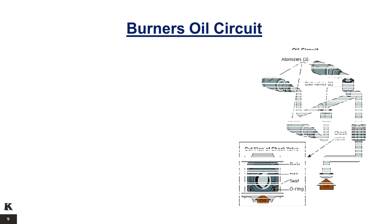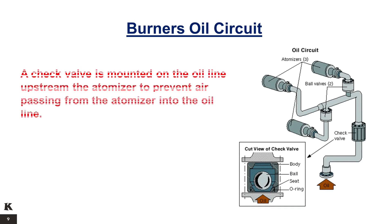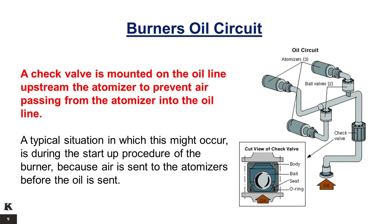Burners Oil Circuit. A check valve is mounted on the oil line, upstream of the atomizer, to prevent air from passing from the atomizer into the oil line. A typical situation in which this might occur is during the start-up procedure of the burner, because air is sent to the atomizers before the oil is sent.